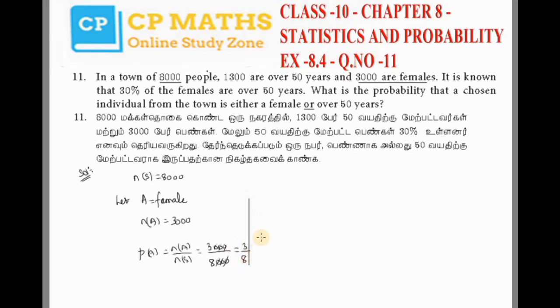P(A) we already have. Let B be over 50 years. Total people who are 50 years and above - 1,300 are over 50 years. So n(B) equals 1,300. P(B) equals n(B) by n(S), so 1,300 divided by 8,000.